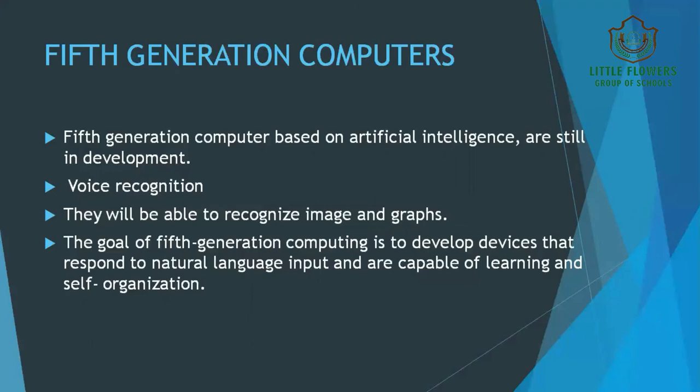Artificial intelligence is a technology which not only helps a computer to think like a human being but also makes it perform activities like a human, such as voice recognition, decision making, and translation of different types of languages. Robots are a very good example of fifth generation computers. Robots have replaced people performing repetitive and dangerous jobs, such as bomb disposal. In the future, robots may also do household work and other jobs for us.